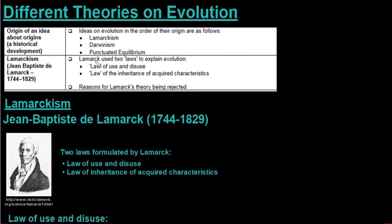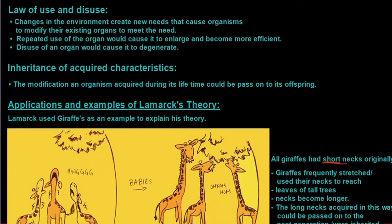He lived from 1744 up until 1829 and Lamarck formulated two laws: the law of use and disuse and then the law of inheritance of acquired characteristics. So let's look at these two laws.